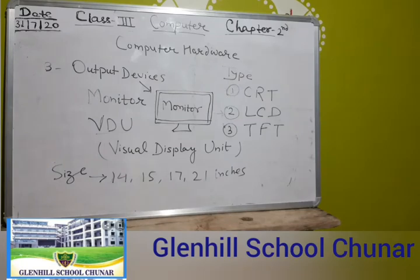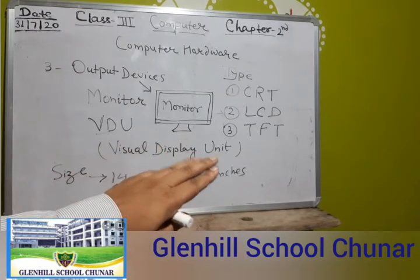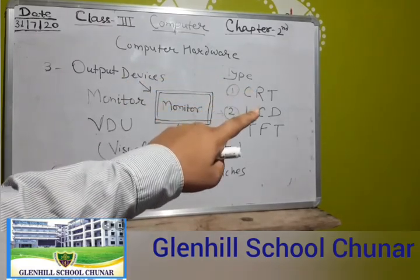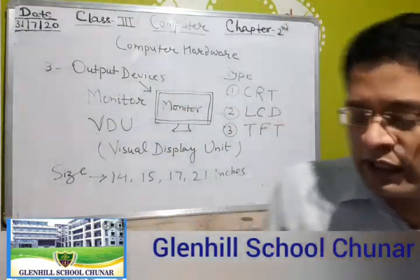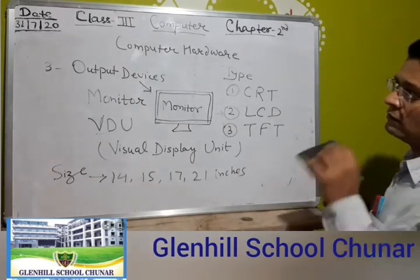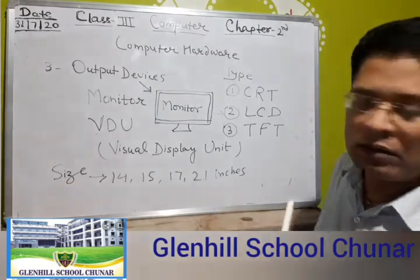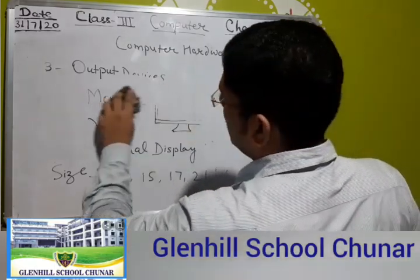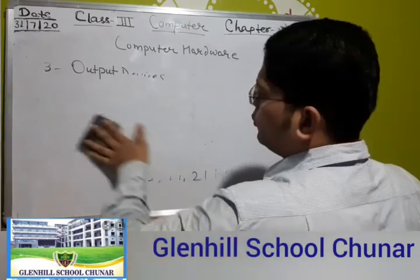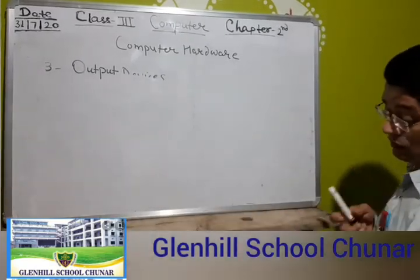So about the monitor: it is like a television, its other name is VDU — Visual Display Unit. The different types are CRT, LCD, and TFT, and it comes in different sizes: 14 inch, 15 inch, 17 inch, and 21 inches. Another very important example of an output device is the printer.